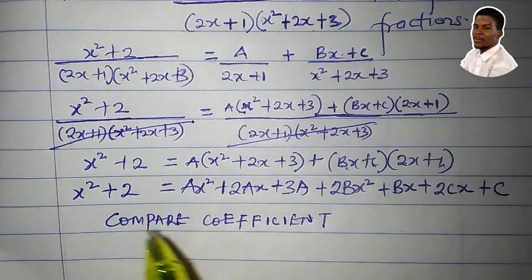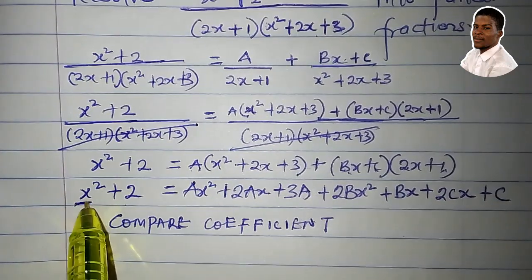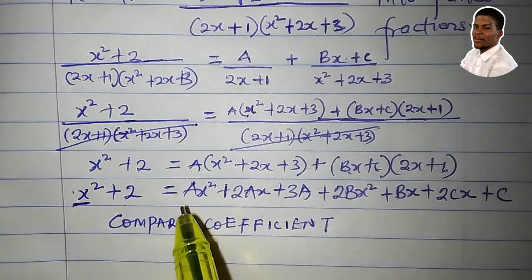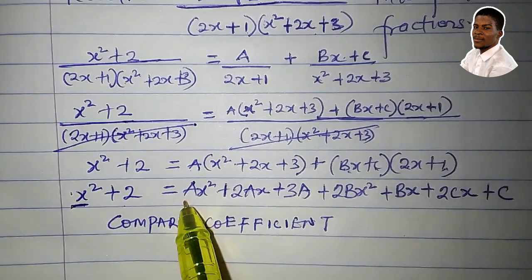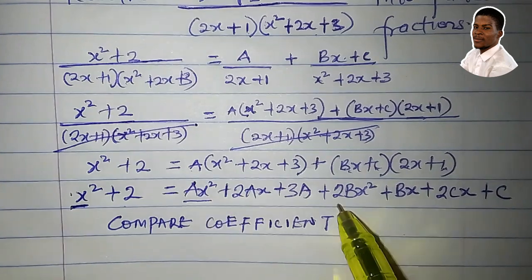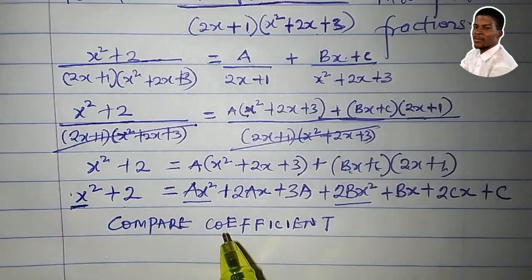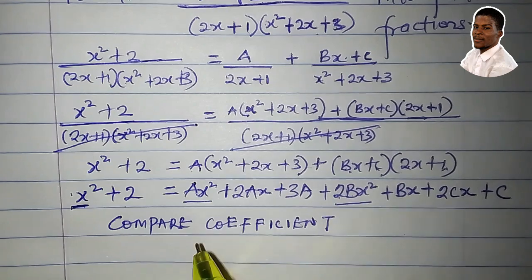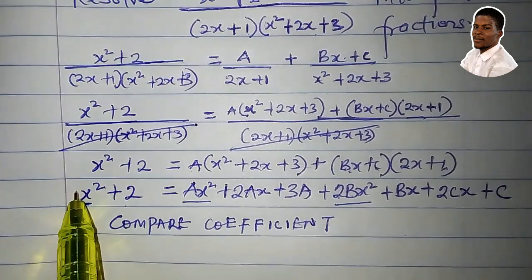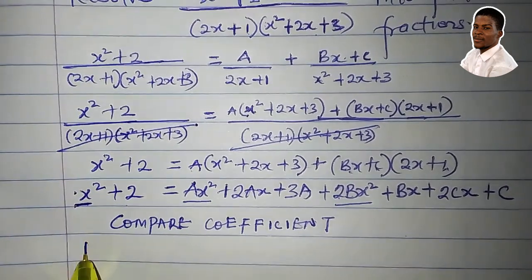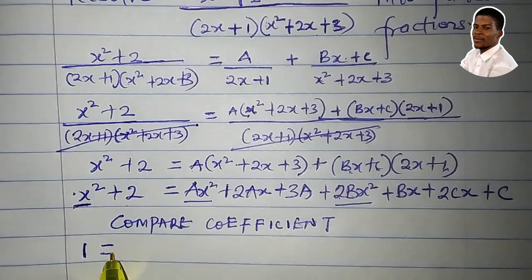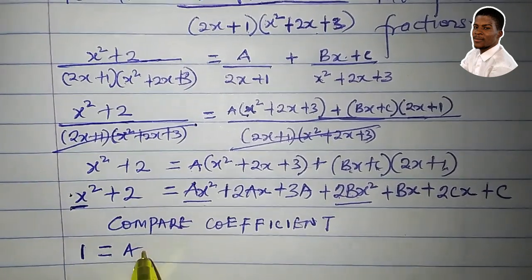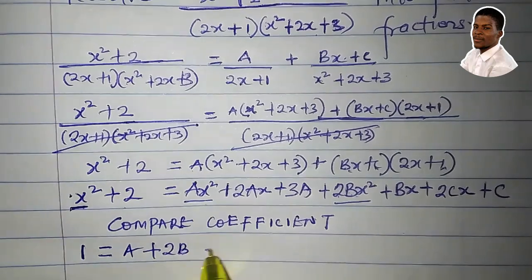Comparing coefficients: on the left-hand side, the coefficient of x² is 1. On the right-hand side, the terms in x² are ax² and 2bx², with coefficients a and 2b. So comparing coefficients of x²: 1 = a + 2b. This is equation 1.